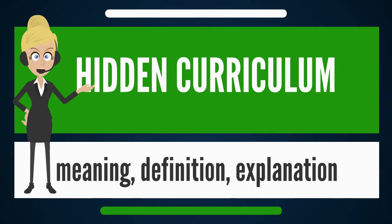Although the hidden curriculum has negative connotations, it is not inherently negative, and the tacit factors involved can potentially exert a positive developmental force on students. Some educational approaches, such as democratic education, actively seek to minimize, make explicit, and/or reorient the hidden curriculum so that it has a positive developmental impact on students. Similarly, in the fields of environmental education and education for sustainable development, there has been advocacy for making school environments more natural and sustainable, such that the tacit developmental forces these physical factors exert on students can become positive factors in their development as environmental citizens.